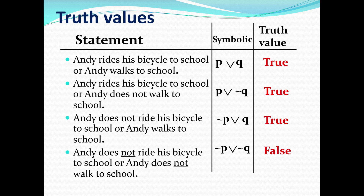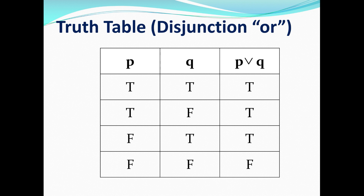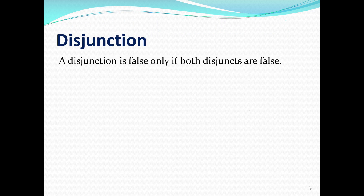Here is the truth table for disjunctions. If both P and Q are true, or even if one of them is false, then the disjunction is true. But if both of them are false, then the entire disjunction is false. To summarize: a disjunction is false only if both disjuncts are false — otherwise it's always going to be true.